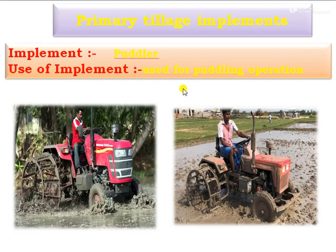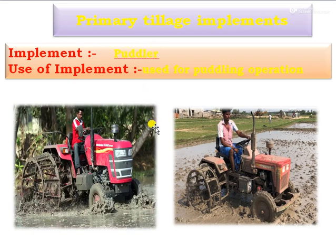Next one is a puddler. This is a tractor-drawn puddler, especially used for transplanted rice. Puddling operation is required and preferable for transplanted or lowland rice. This puddling operation will be carried out with the help of the puddler.